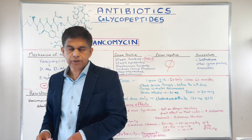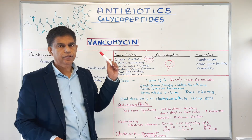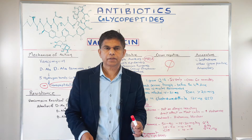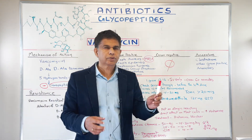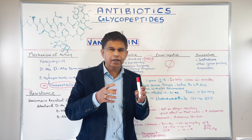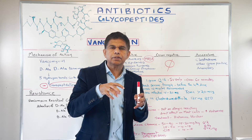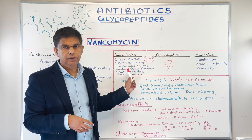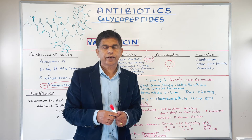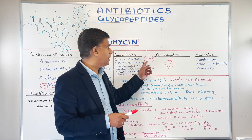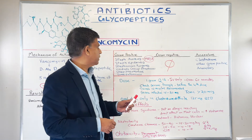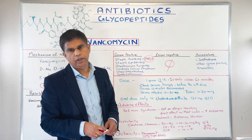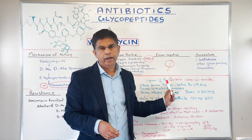The spectrum of coverage: the first thing we need to know is that vancomycin covers only gram-positive organisms — don't even think about anything else. Why not gram-negative? Because vancomycin is very bulky and cannot go through the pores or channels in the gram-negative cell membrane. For gram-positive coverage, important organisms include MRSA, Staph epidermidis, Streptococcus pyogenes, viridans group streptococci, Streptococcus pneumoniae, and some Enterococci.